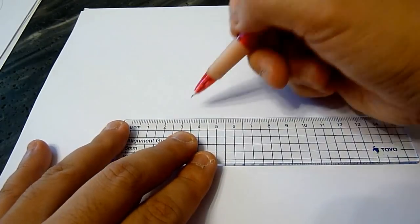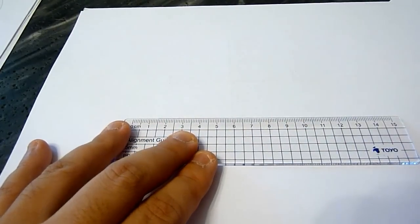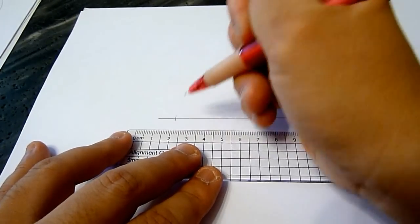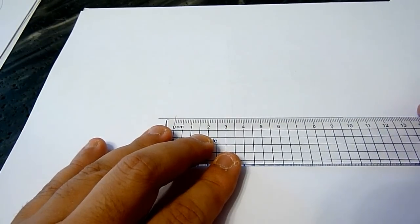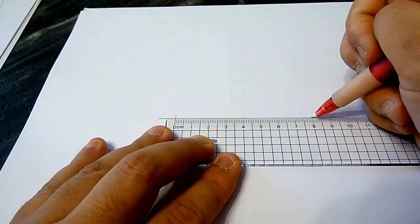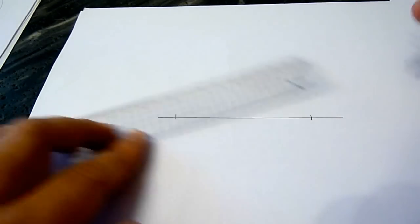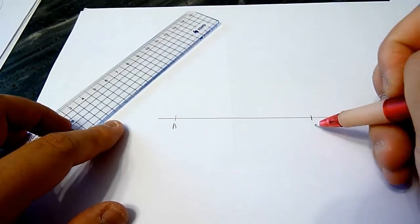So first of all, we draw a line on the paper. Assuming that the distance between point A and point B is 8 cm, we mark out the two points A and B on the paper.